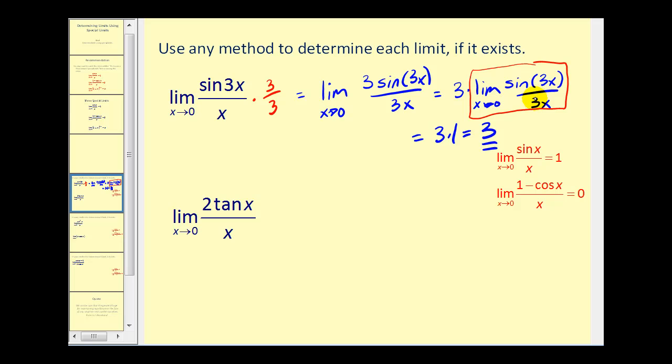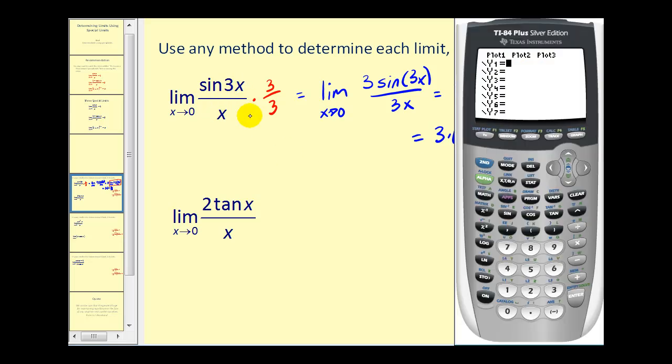Let's go ahead and take a look at this graphically. Let's type in our function sin(3x) divided by x. We're approaching zero, so let's let our x interval go from negative two to two. We think our limit is equal to three, so let's let the y interval go from negative one to four. Let's go ahead and graph this.